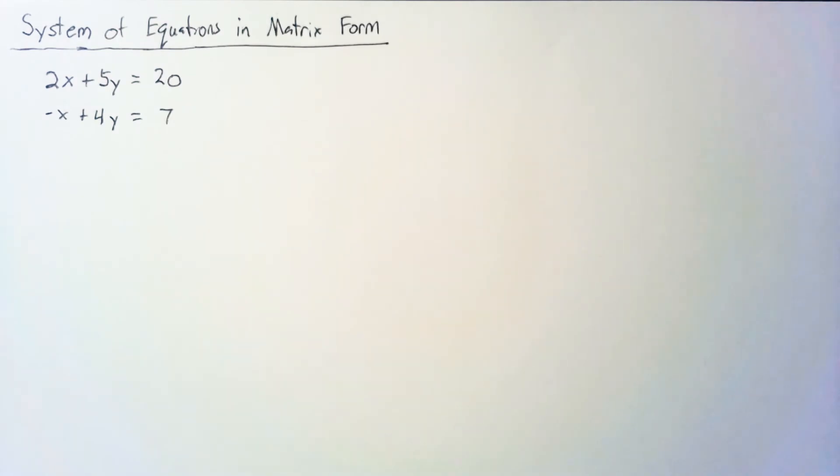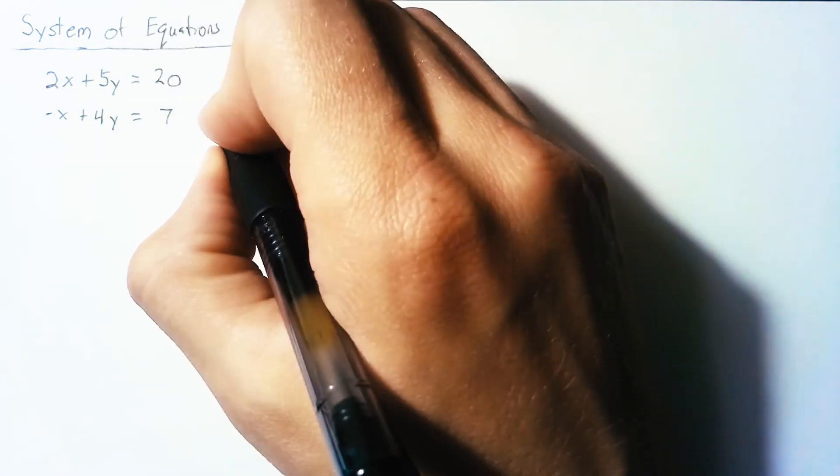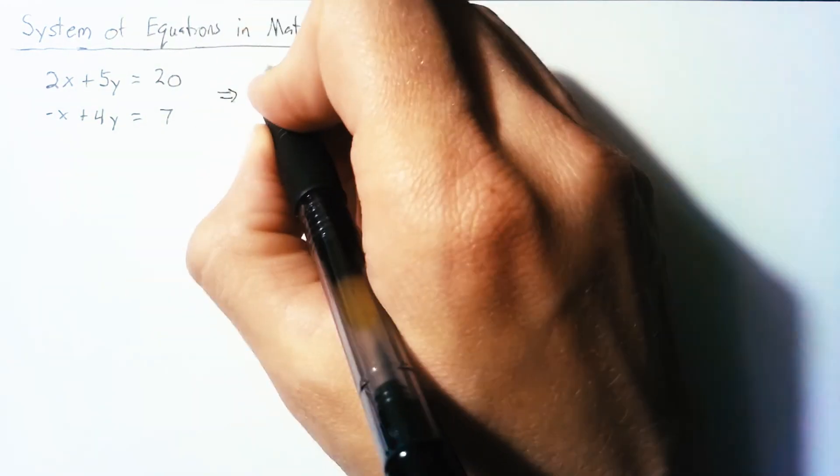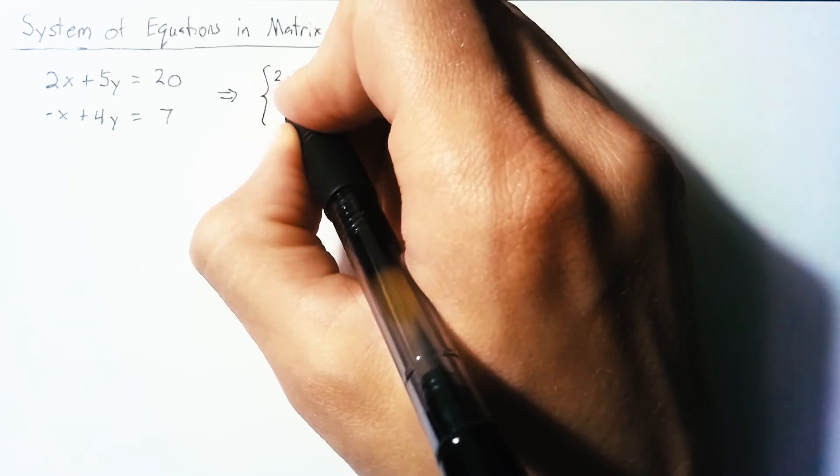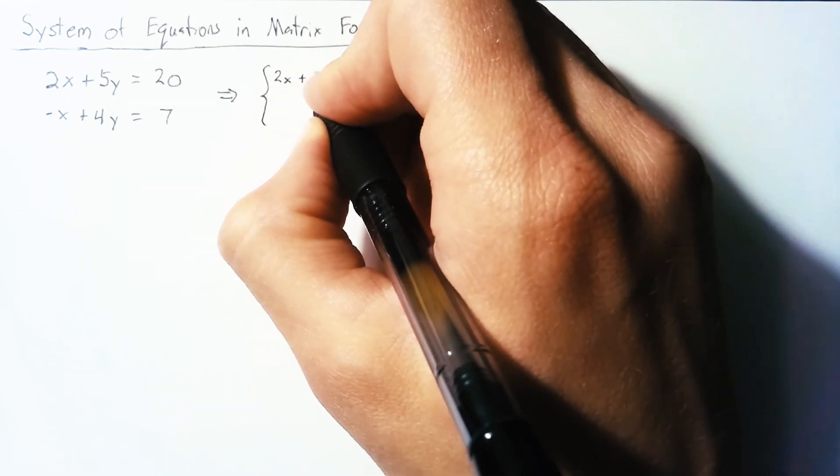So the first thing we want to do with this is convert it into matrix form. To get there, let's start off with converting this into two vectors. We can just take these exact same two equations and put them into vectors, and nothing really is going to change from this.